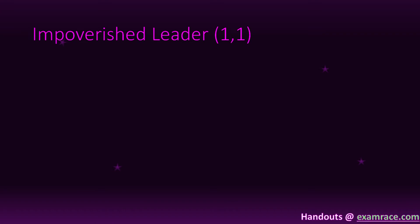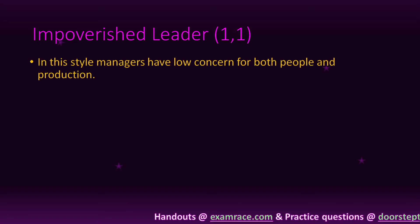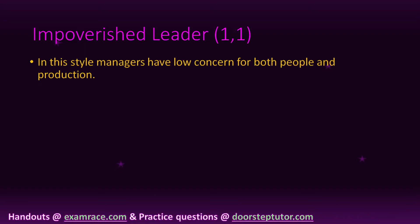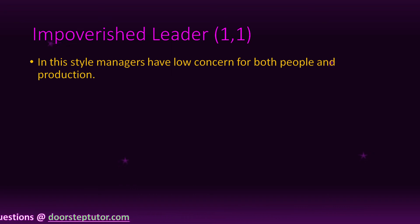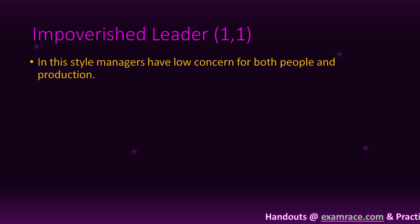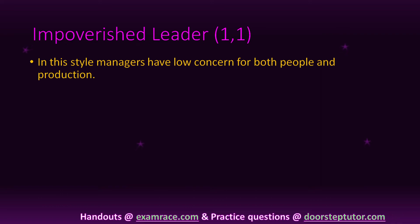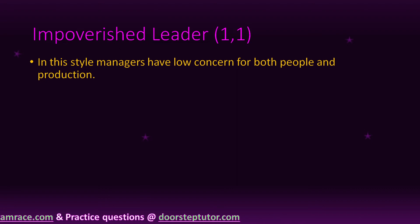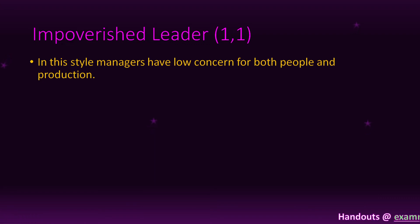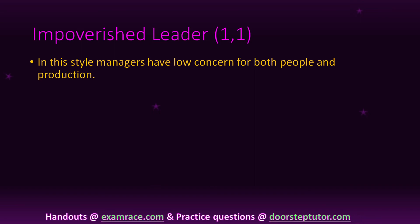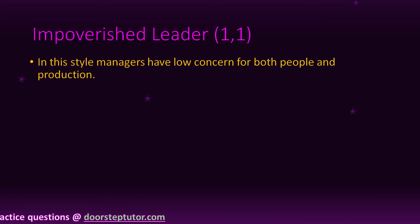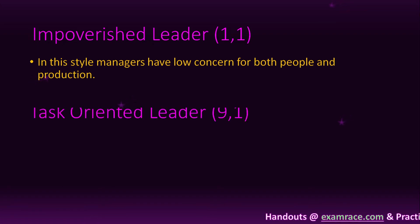The Impoverished leader has low concern for both people and production — positioned at (1,1). This leadership style is ineffective because if an organization has low concern for people and also low concern for task, the organization cannot develop. So in an exam, if asked which leadership style is ineffective, the answer is Impoverished leadership style.